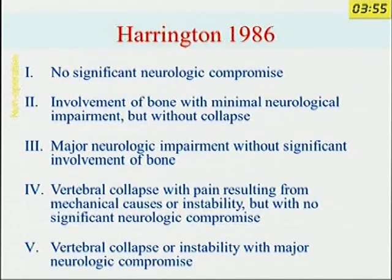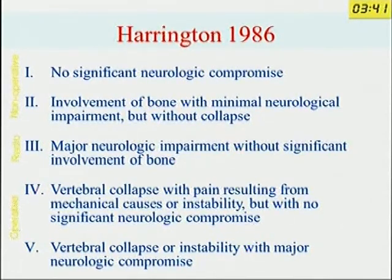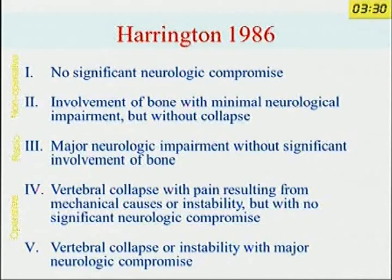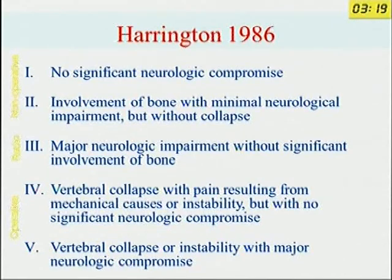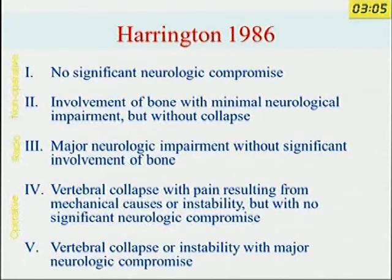There are certain guidelines for when to do surgery versus non-operative treatment. Non-operative treatment and radiation can be done if there is no significant neuro-compromise, or with minimum neuro-impairment and no significant bone involvement. If there is nothing to decompress, there is no point in decompression. According to Harrington's recommendations, you should operate in vertebral collapse with pain from mechanical instability, and in vertebral collapse with major neuro-compromise.